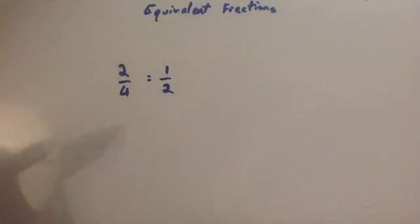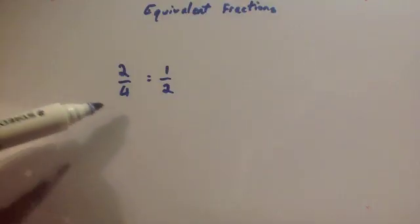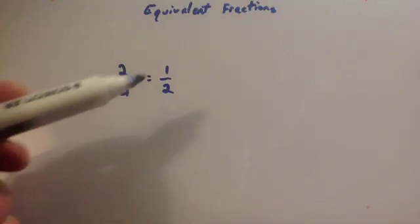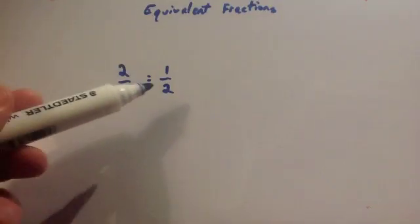Okay, in this video we're going to look at equivalent fractions. So here we've got two fractions that are equivalent to each other. We've got two quarters and a half. If you imagine two quarters of something, well that's the same as a half of it. So these two fractions are equivalent.